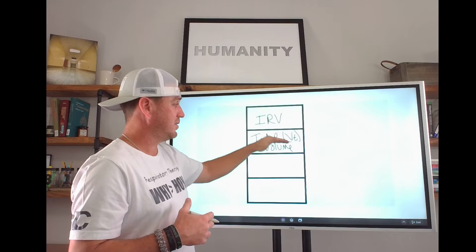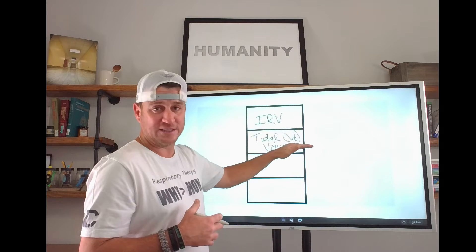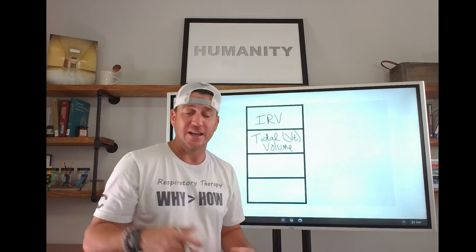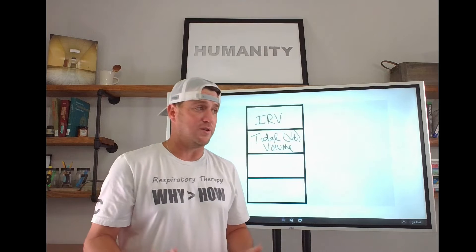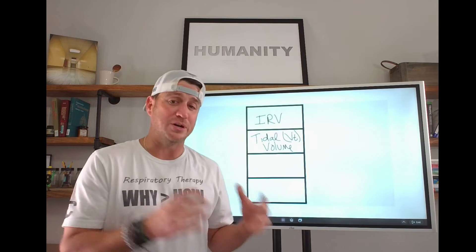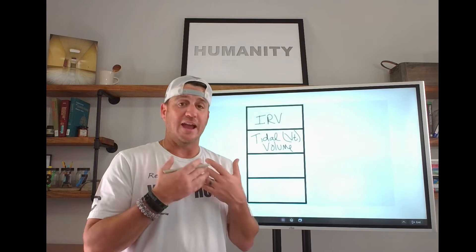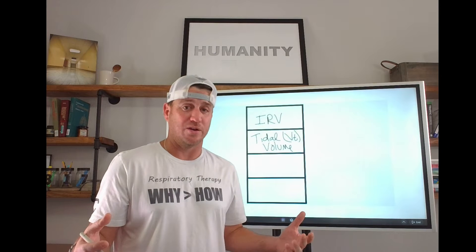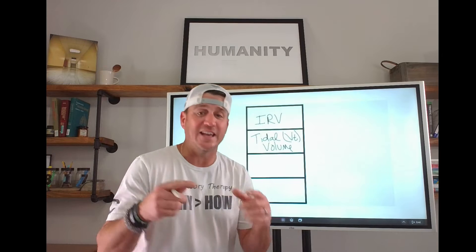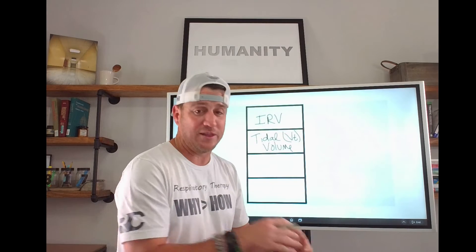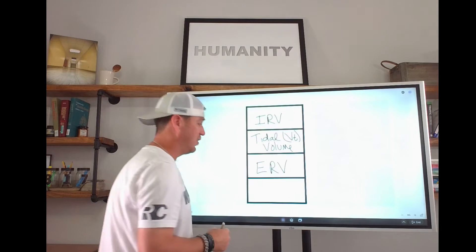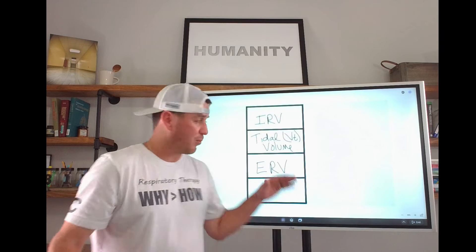I can exhale back to my normal resting tidal volume, or I can exhale even further. When I'm breathing normally, I can breathe normal — but then I can push out more air. I breathe in normal and then push out all of the air that I can. I just blew out even more air than what I'm normally breathing. This is what we call expiratory reserve volume.